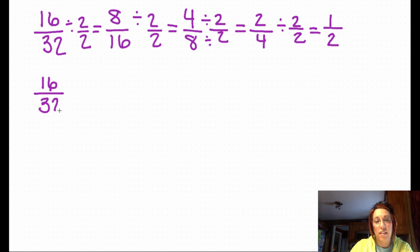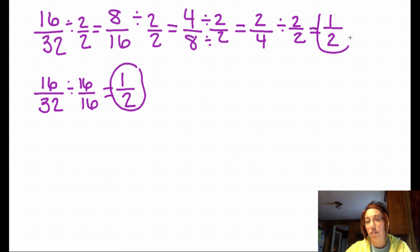So let's look at strategy number two. 16/32. I know 16 can be divided by itself and get 1. 32 can also be divided by 16. So my greatest common factor is 16. 16 divided by 16 is 1. 32 divided by 16 is 2. Either way, this fraction reduces to 1/2.